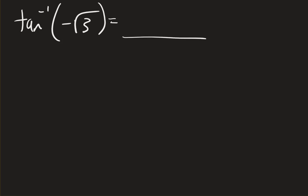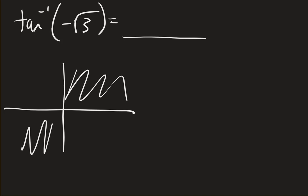Alright, so first off, you need to know where on the unit circle tangent is negative square root of 3. So it's positive in 1 and 3, that limits to 2 and 4.